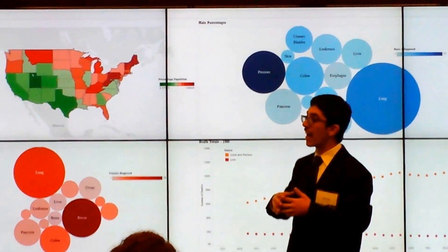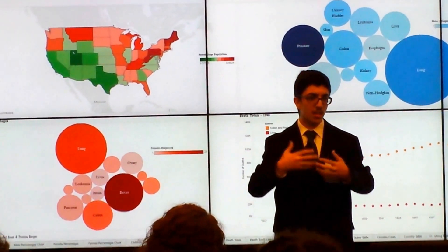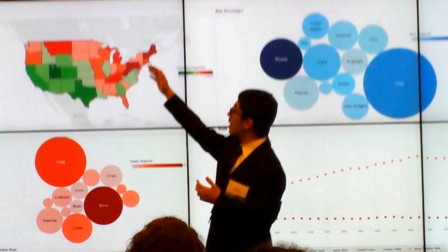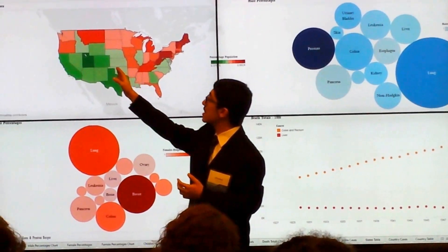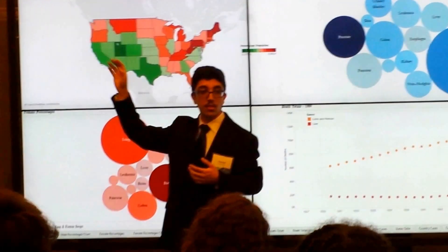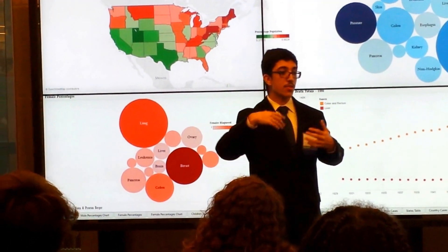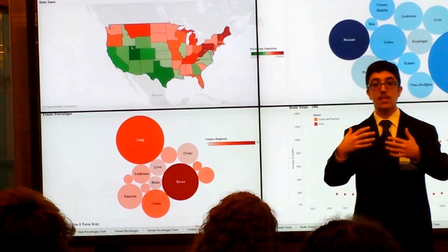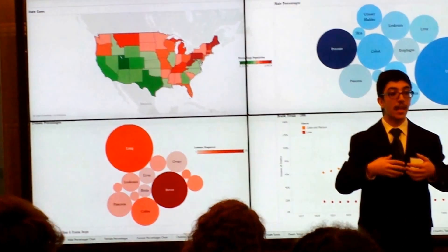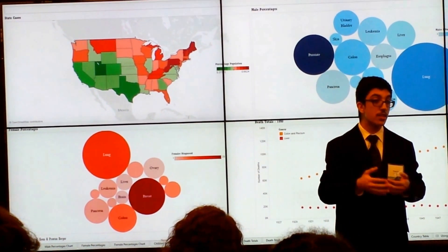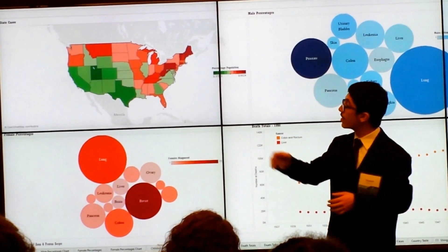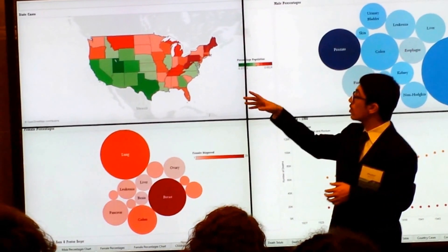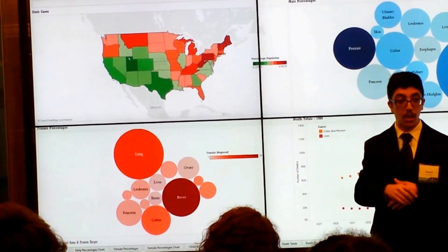What does this mean? I had to investigate, because I'm confused about why the northeast is red and the southwest is green. One of the main reasons is the fact that there's a greater population in the northeast than in those states. There are also more institutions that can actually diagnose cancer in the northeast than in states like New Mexico, Utah, and Arizona.